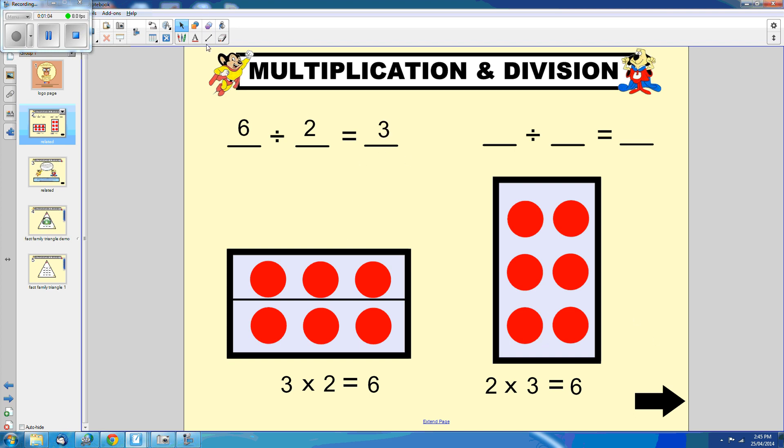Here, I can divide 6 by 3 by creating 3 equal groups across the rows of the array. Here, I have shown that 6 divided by 3 equals 2 because there are 2 circles in each group I have created.